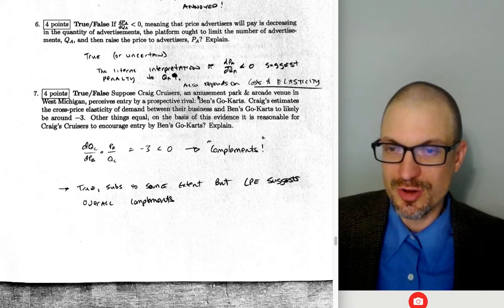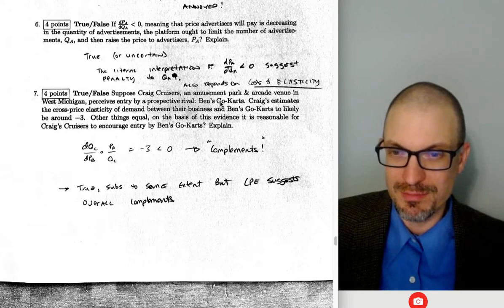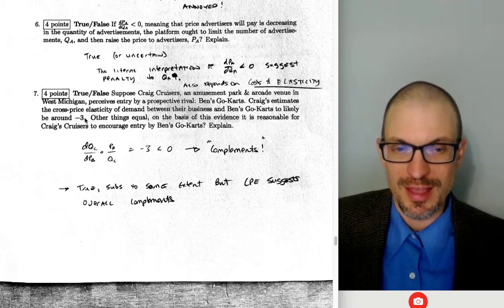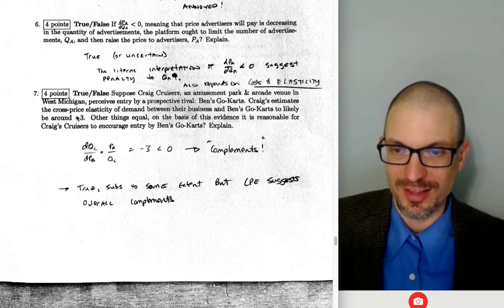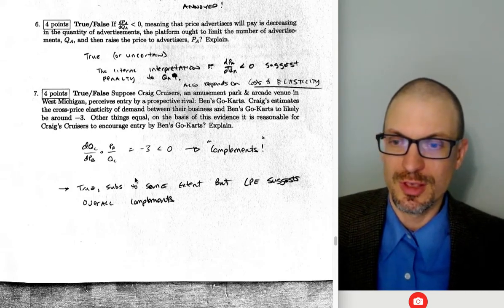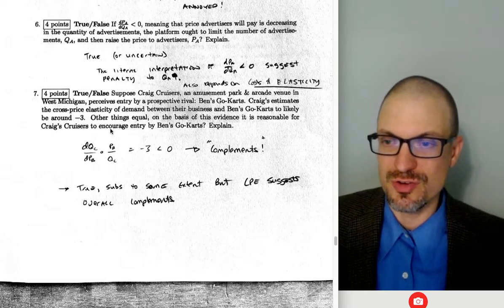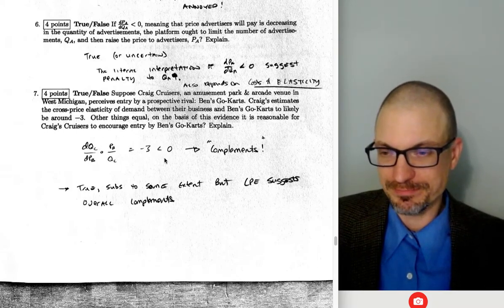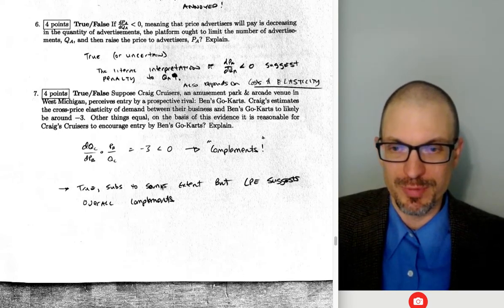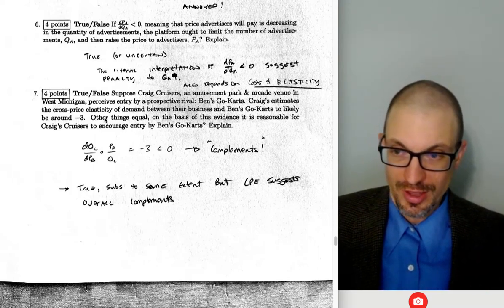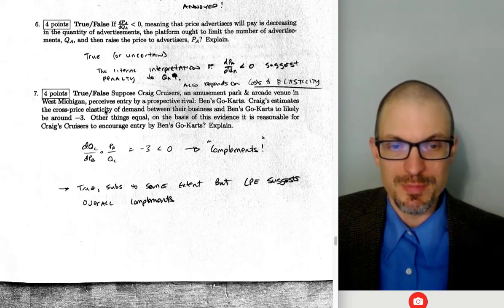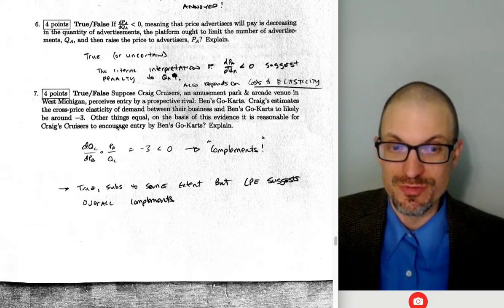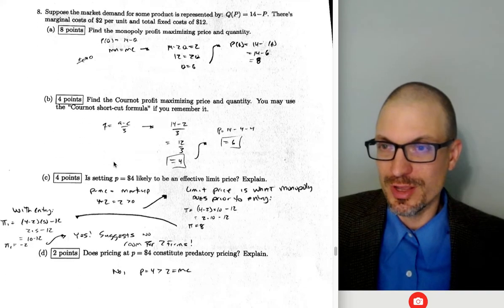Craig's Cruisers, an amusement park and arcade in West Michigan, perceives entry by Ben's Go-Karts. Craig's estimates the cross-price elasticity is around −3. The negative sign indicates a complementary relationship; the magnitude greater than 1 in absolute value indicates they're close complements. Other things equal, Craig's Cruisers should encourage entry — the agglomeration effect means two venues together create a larger economic magnet drawing people to the area, reinforcing the complementary relationship.